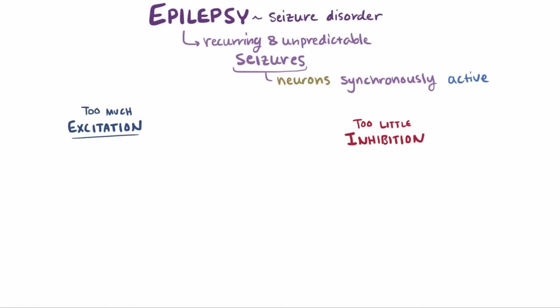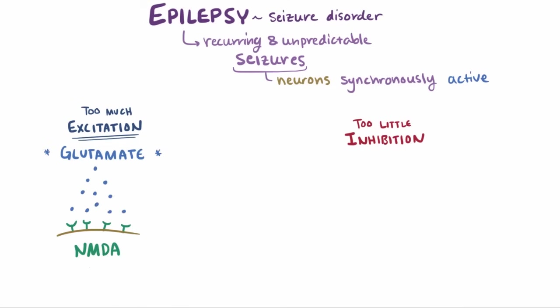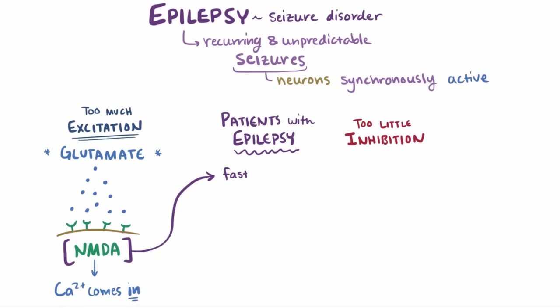The main excitatory neurotransmitter in the brain is glutamate, and NMDA is the primary receptor that responds to glutamate by opening ion channels that let calcium in, a positive ion that tells the cell to send signals. Some patients with epilepsy seem to have fast or long-lasting activation of these receptors.